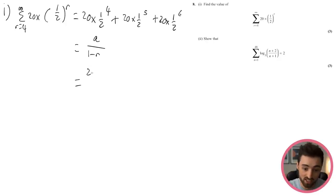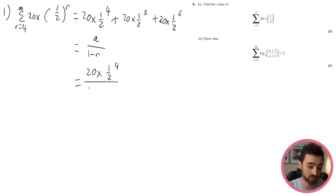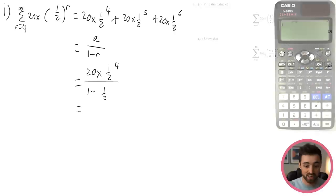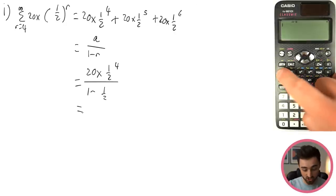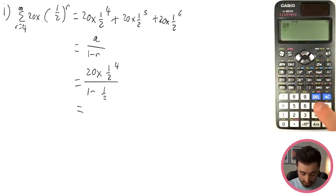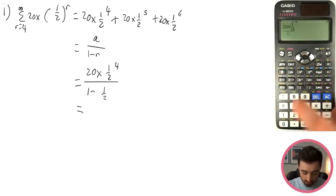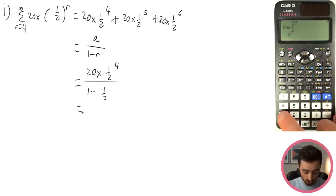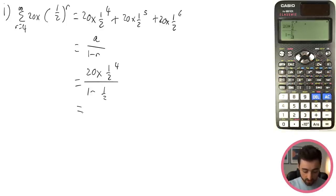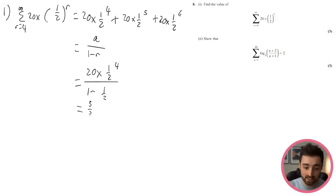Calculating: 20 × (1/16) divided by 1/2 = (20/16) × 2 = 40/16 = 5/2.